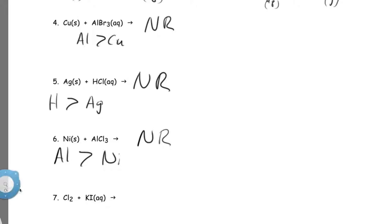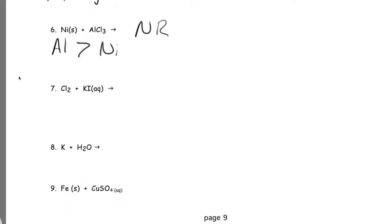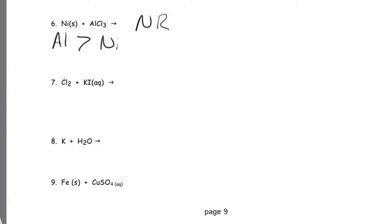All right, now let's look at some non-metals. Let's look at the case of chlorine. Chlorine is a non-metal, so it's not going to replace potassium, but it could replace iodine. And here's the order of the activity of the non-metals we're going to look at. Fluorine is at the top, then chlorine, then bromine, then iodine. So that means that fluorine is more active than chlorine. It just goes in the same order as they are top to bottom on the periodic table.